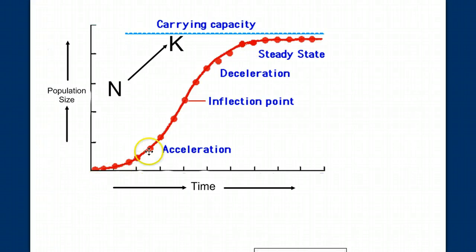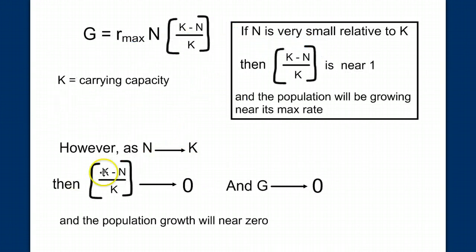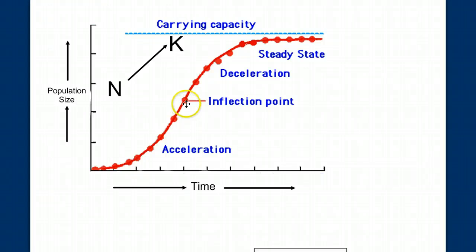So this is how populations grow. They'll grow slowly at first, then accelerate. At some point, when N gets high enough so that this factor starts becoming important — moving away from 1 and closer to 0 — we get this inflection point where we start to decrease the rate of population growth, and eventually we reach a growth rate of 0.